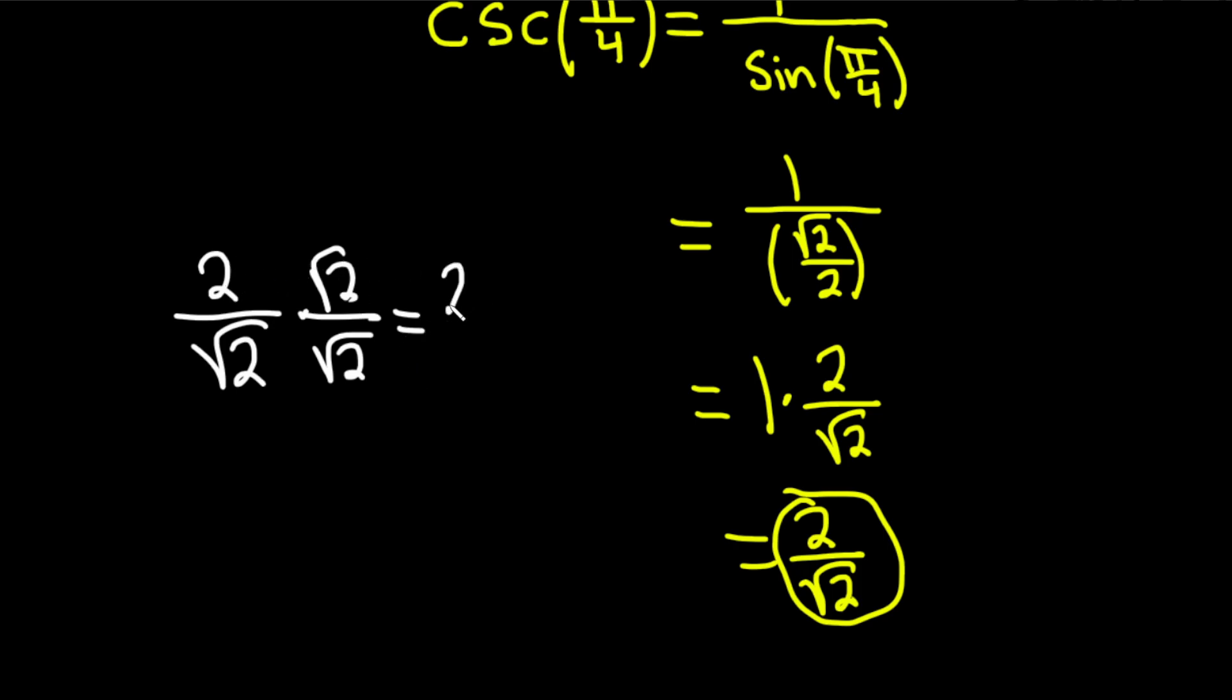2 times the square root of 2 is 2 square root of 2, over, and then the square root of 2 times the square root of 2 is 2. So these cancel, and so we get the square root of 2. So this is also an acceptable answer.